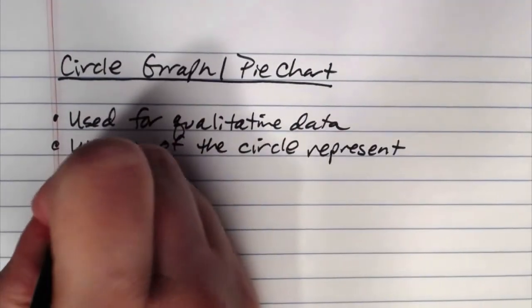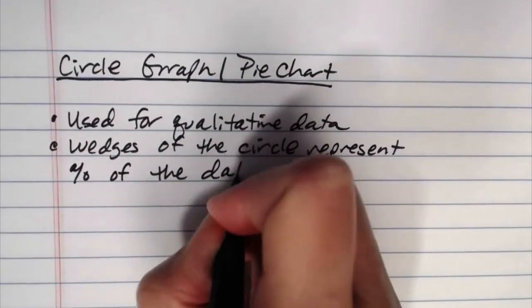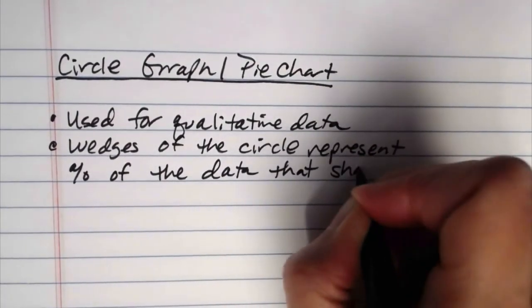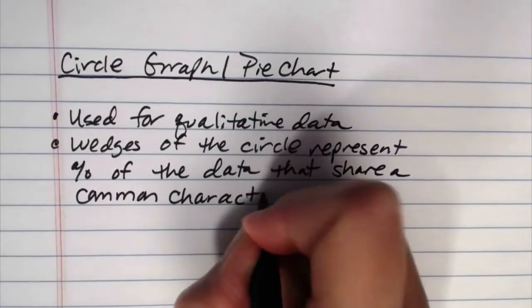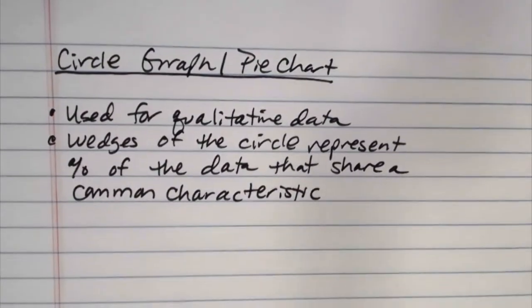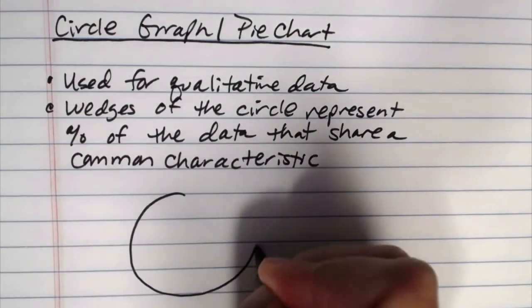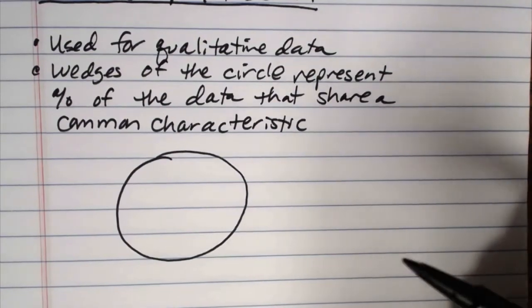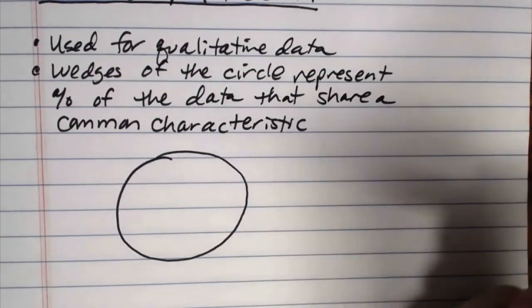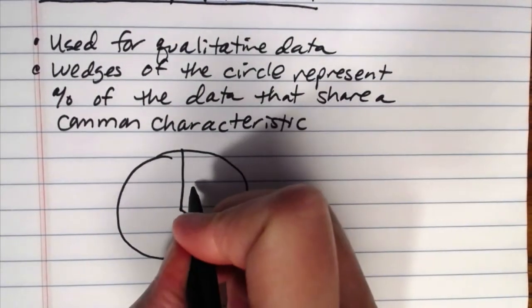Wedges of the circle represent usually percentages of the data that share a common characteristic. So you'll see these a lot in budget work for example.